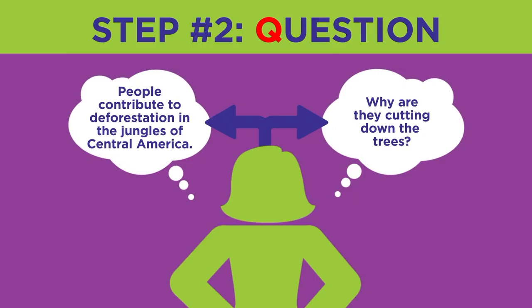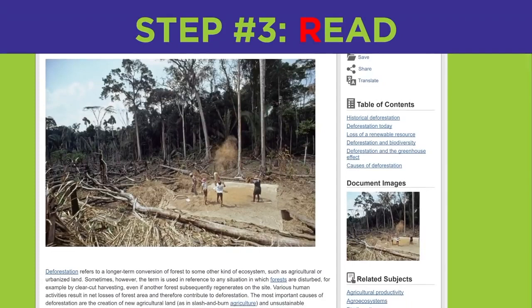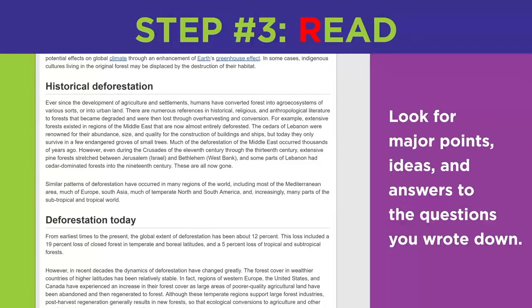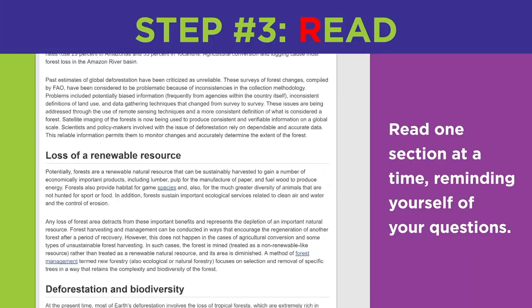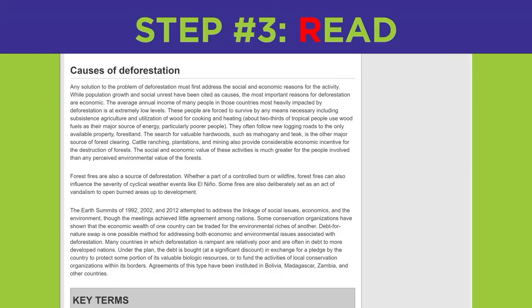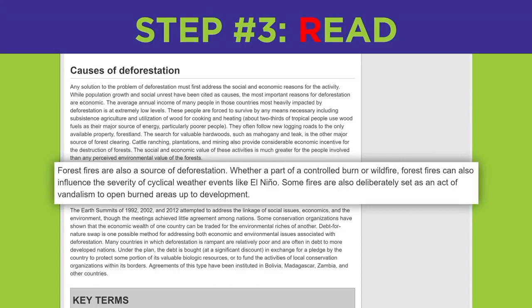For the third step, read the text carefully, looking for major points, ideas, and answers to the questions you wrote down. Read one section at a time, reminding yourself of your questions. For example, when reading this section, you'll notice that forest fires is one answer to your question: what are the causes of deforestation?